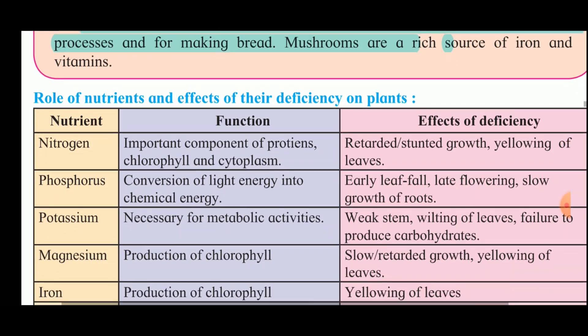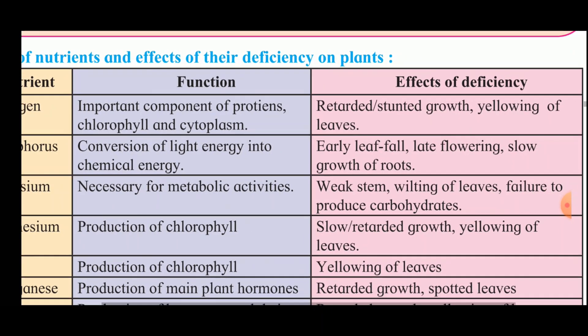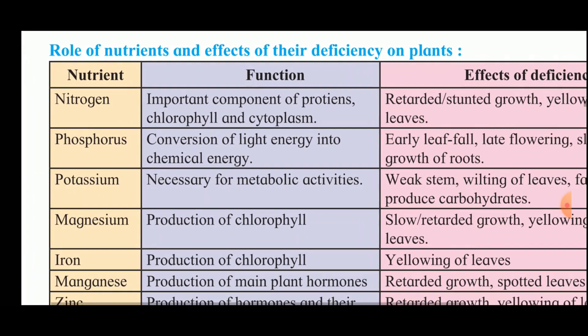Now we will see the role of nutrients and the effects of their deficiency on plants. The table has three columns: nutrient, function, and effect of deficiency. Nitrogen is an important component of proteins, chlorophyll, and cytoplasm — its deficiency causes stunted growth and yellowing of leaves. Phosphorus is involved in conversion of light energy into chemical energy — its deficiency causes early leaf fall, late flowering, and slow root growth.